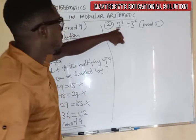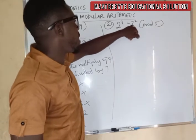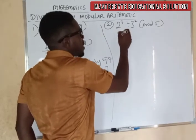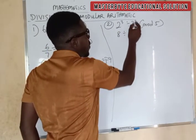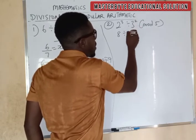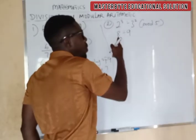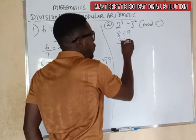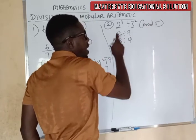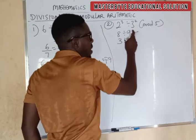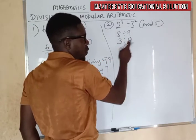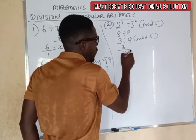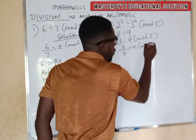Now the second example: we have 2 raised to power 3, divided by 3 raised to power 2. So 2 raised to power 3 gives us 8, divided by 3 raised to power 2 gives us 9. Now, 8 mod 5 gives us 3, and 9 mod 5 gives us 4 — because how many 5s do we have in 8? 1 remainder 3. How many 5s in 9? 1 remainder 4. So what we have is 3 over 4, equal to x, mod 5.